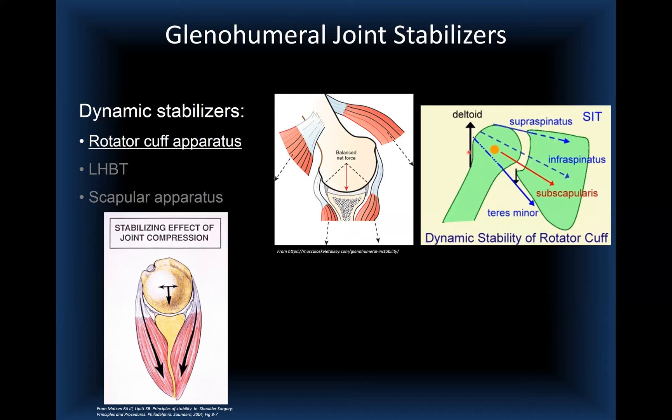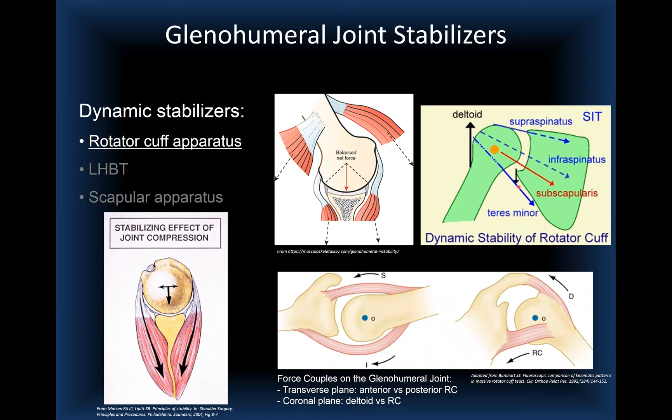The deltoid vector goes upward while the balance net vector of the rotator cuff tendons goes downward, creating equilibrium. These force couples occur both in the transverse plane and in the coronal plane. In the transverse plane, the balance is between the anterior and posterior rotator cuff forces, while in the coronal plane the coupling occurs between the deltoid and the rotator cuff.